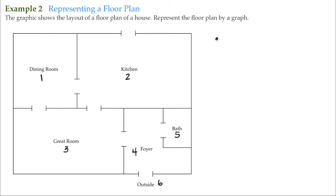So I'm going to go like this. I know I need six vertices: one, two, three, four, five, and six. So maybe this is the dining room, here's the kitchen, I'm going to make this the outside, the great room, the foyer, and the bath.